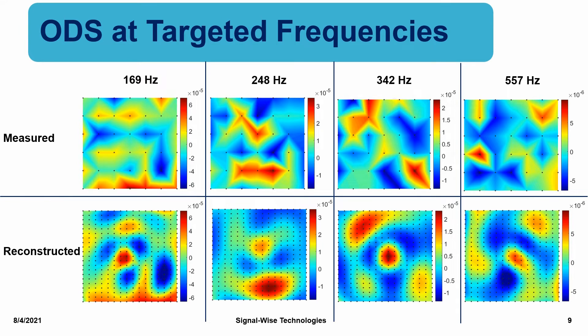In addition to the surface velocity spectrum, we also compare the forced vibration patterns, namely operational deflection shape, ODS, with the reconstructed ones. For brevity, we only display validations of the measured ODS versus reconstructed ones at targeted frequencies 169 Hz, 248 Hz, and 342 Hz.